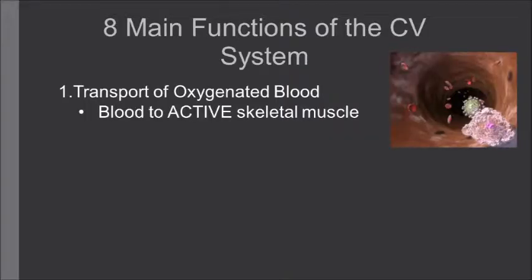The first function of the cardiovascular system is to transport oxygenated blood. In exercise physiology, we're really looking at the transport of oxygenated blood to active skeletal muscle. For example, if you're eating a sandwich and not doing any physical activity, you want more oxygenated blood sent towards your visceral organs to digest the food. But when you're running, you want more oxygenated blood transported to your skeletal muscles and away from your visceral organs.